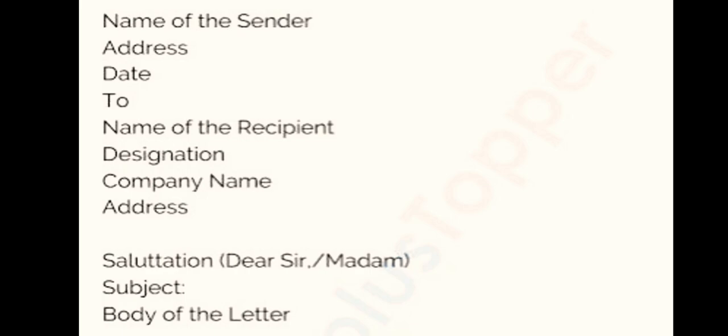For the formal letter: start with 'Examination Hall,' address, city ABC, then date. Then write the recipient — 'The Editor,' 'The Director,' or 'The Manager.' You can skip writing 'To' explicitly. Write the designation, and if writing to an editor write the newspaper name, e.g. 'The Nation.' If writing to a company manager, mention the company name as stated in the question. Address details are not necessary to repeat.